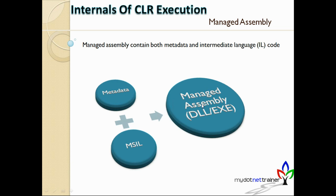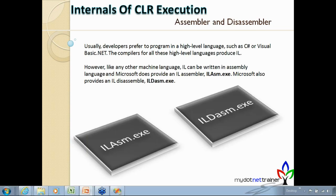A managed assembly has two parts: metadata and MSIL. The metadata is stored inside the manifest of the assembly. Metadata contains information about the assembly, while MSIL is the core instructions — the code body — that need to be executed. Together, metadata and MSIL combine to form an assembly.